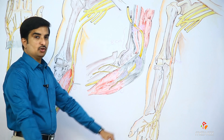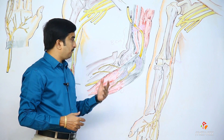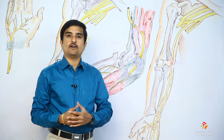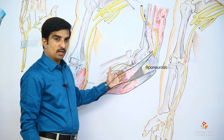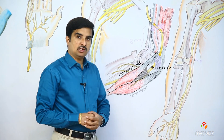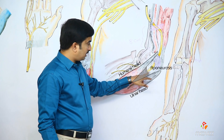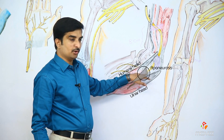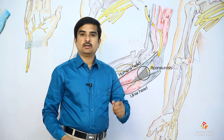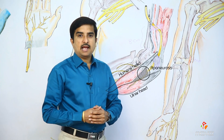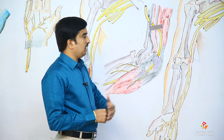The sites of entrapment of the ulnar nerve in the cubital tunnel include entrapment between the two heads of the flexor carpi ulnaris. As you can see, the aponeurosis connects the humeral head as well as the ulnar head of the flexor carpi ulnaris, so entrapment may occur exactly behind the aponeurosis between the humeral and ulnar heads.